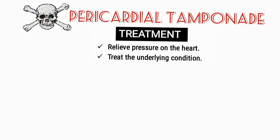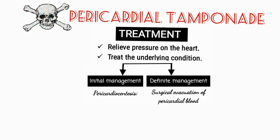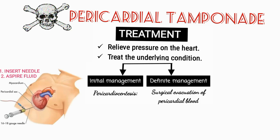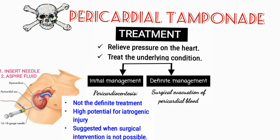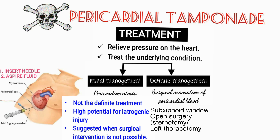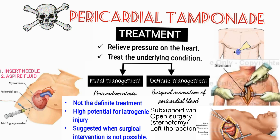The treatment for pericardial tamponade has two purposes: first, to relieve the pressure on the heart, and second, to treat the underlying condition. Initial management is by pericardiocentesis, which involves the insertion of a needle through the skin and into the pericardium to aspirate fluid. However, it is not the definitive treatment because it has a high potential for iatrogenic injury, so it is only suggested when surgical intervention is not possible. The surgical evacuation of pericardial blood is the definitive treatment, either via subxiphoid window or by open surgery like sternotomy or left thoracotomy.